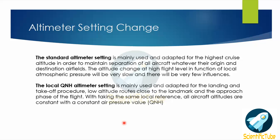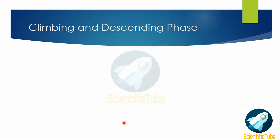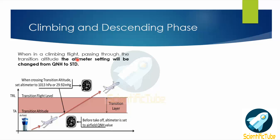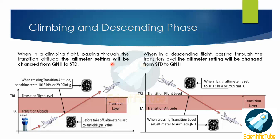Separation is maintained and guaranteed in this way. Now let's look at the climbing and descending phase. When a climbing flight passes through the transition altitude, the altimeter setting should always be changed from QNH to standard. Similarly, when a descending flight passes through the transition level, the altimeter setting should always be changed from standard to QNH.